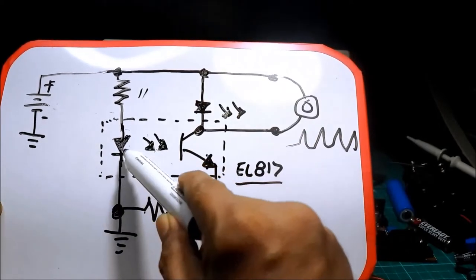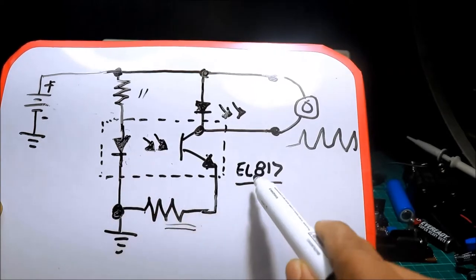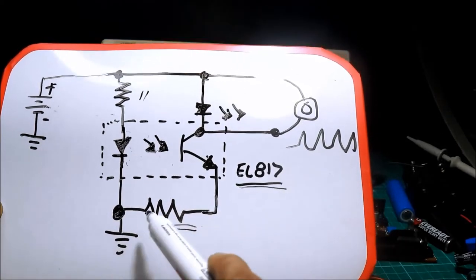Pag wala yan, delikado yung mga LED. Itong LED ito, photodiode. Nasa loob ng EL817.